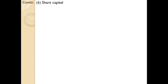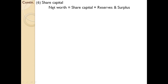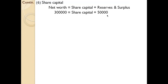For share capital: we already found net worth. We know that net worth equals share capital plus reserves and surplus. Net worth is 3,00,000 and reserves and surplus is given in the question as 50,000. So share capital equals 3,00,000 minus 50,000, which is 2,50,000.